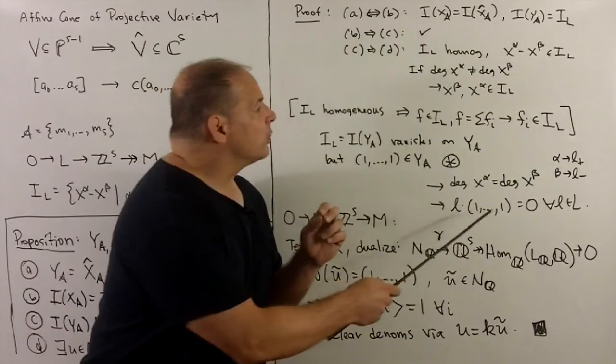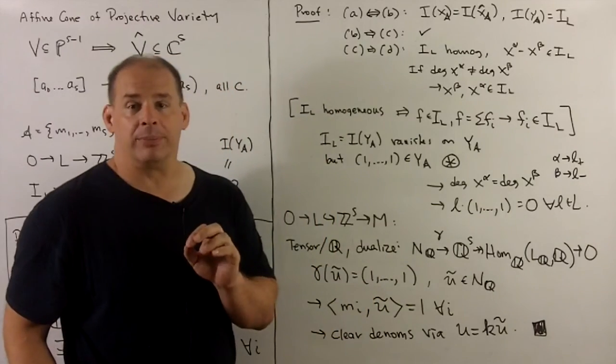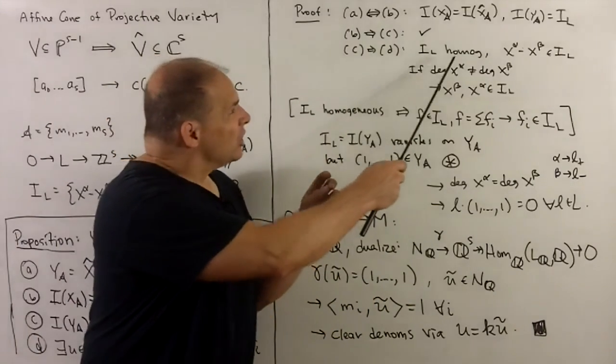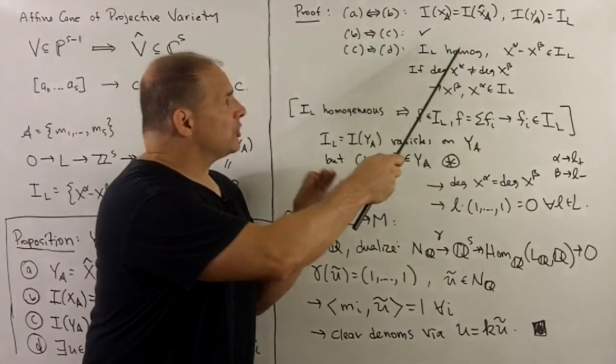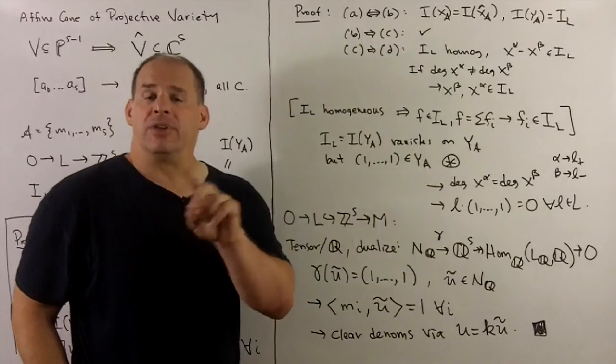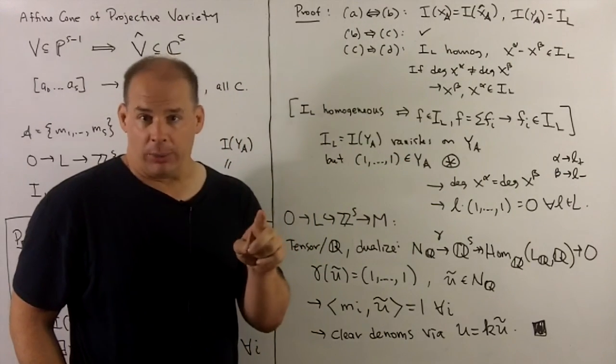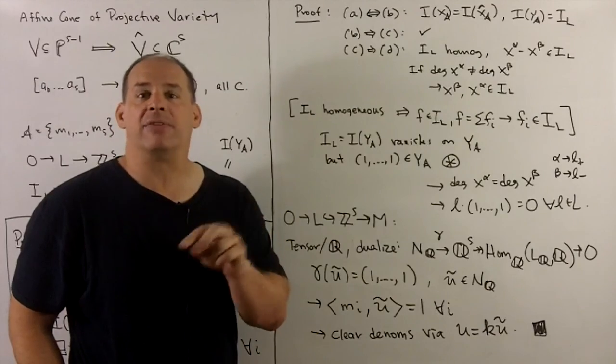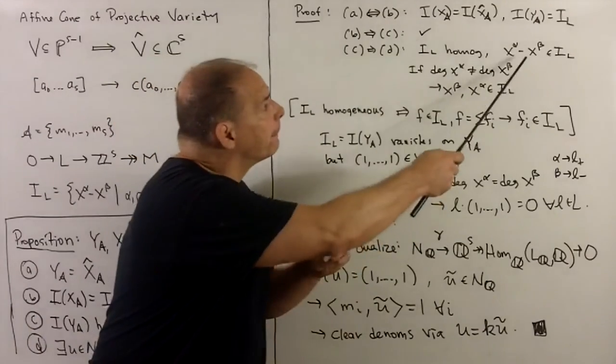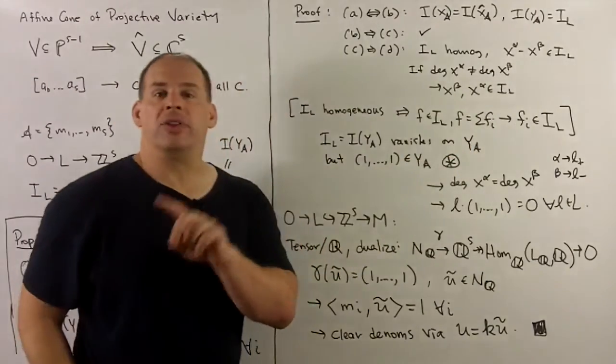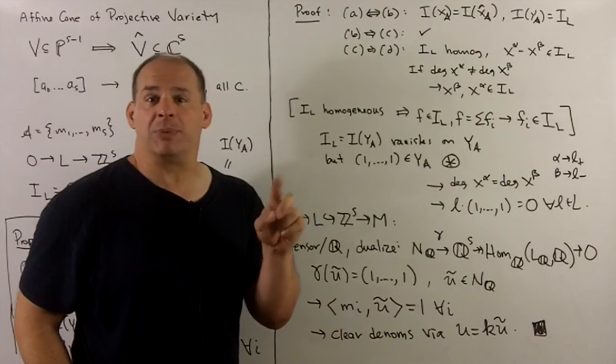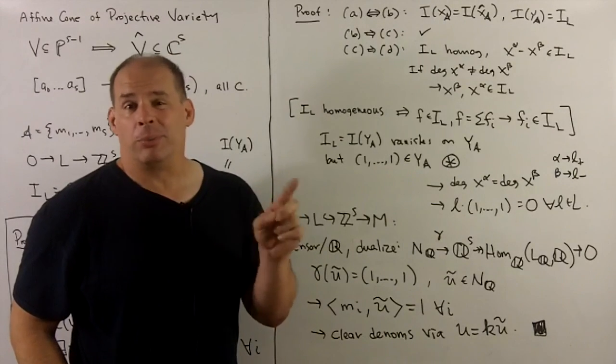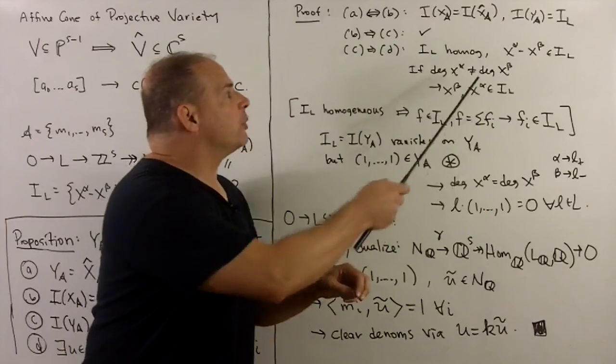To show this, we first do a proof by contradiction. I want to show that if I have a toric ideal that's homogeneous, and it's generated by binomial differences, let's take an x-alpha minus x-beta. We want to show that the degrees of x-alpha and x-beta have to be the same. So, proof by contradiction, I assume that they're different.